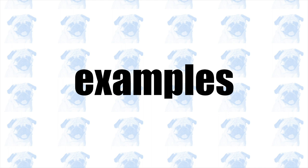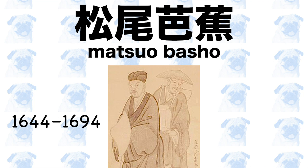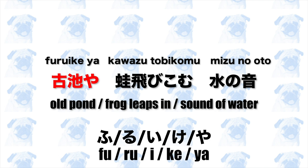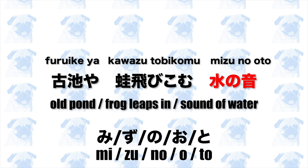Let's look at one of the most famous haiku by Matsuo Basho. Note that Basho lived approximately 200 years before the invention of the term haiku, but his poems have all the characteristics of haiku, so it is common to refer to them as haiku. Furuikeya / Kawazu tobikomu / Mizunoto. The first phrase, Furuikeya, has 5 moras. The second phrase, Kawazu tobikomu, has 7 moras. The last phrase, Mizunoto, has 5 moras.